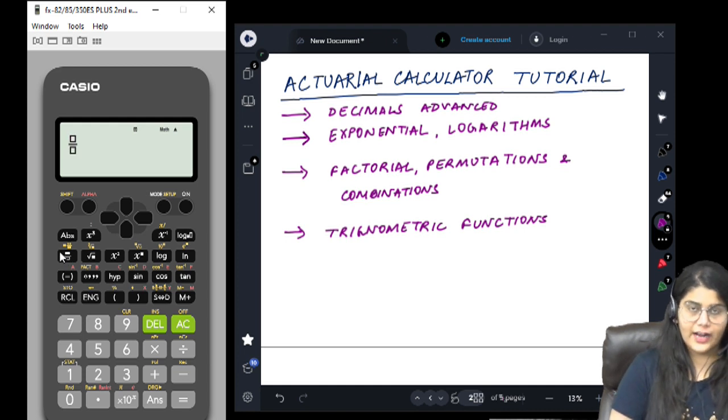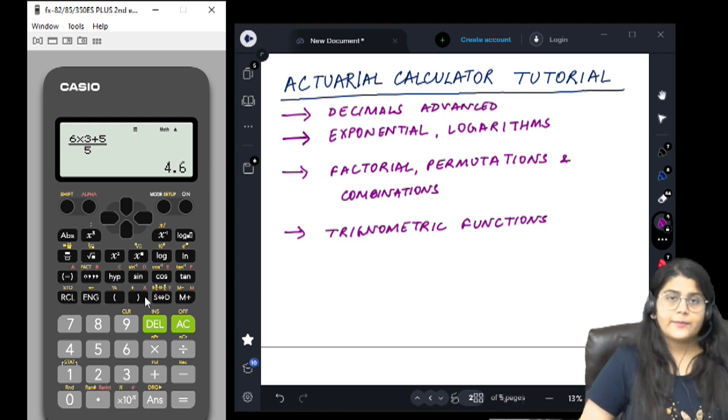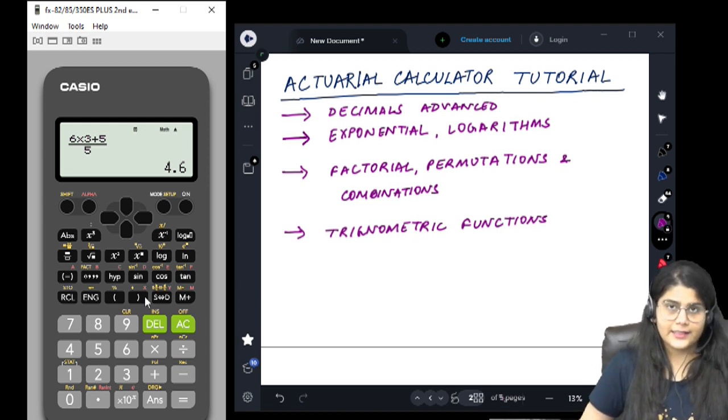Again fraction mode let's enter. 6 into 3 plus 5 and in the denominator let's say we want 5 equal to. Now, we are getting it in the fractional mode. Decimal mode, the answer is 4.6.